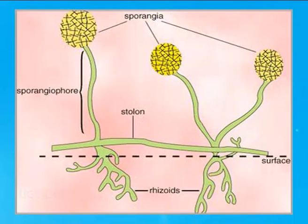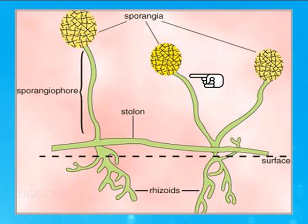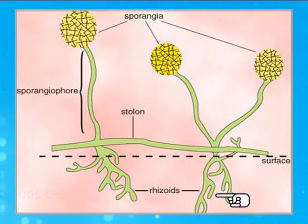In addition to spores, there are many specialized structures giving characteristic identity to different molds. For example, the stolon — a hypha that runs parallel to the substrate. When the stolon gives rise to hyphae growing upward, this is known as aerial mycelium, which ultimately forms sporangia and spores. When the hyphae grow downward like roots, these are known as rhizoids. Stolons and rhizoids are characteristic features seen in the case of rhizopus.